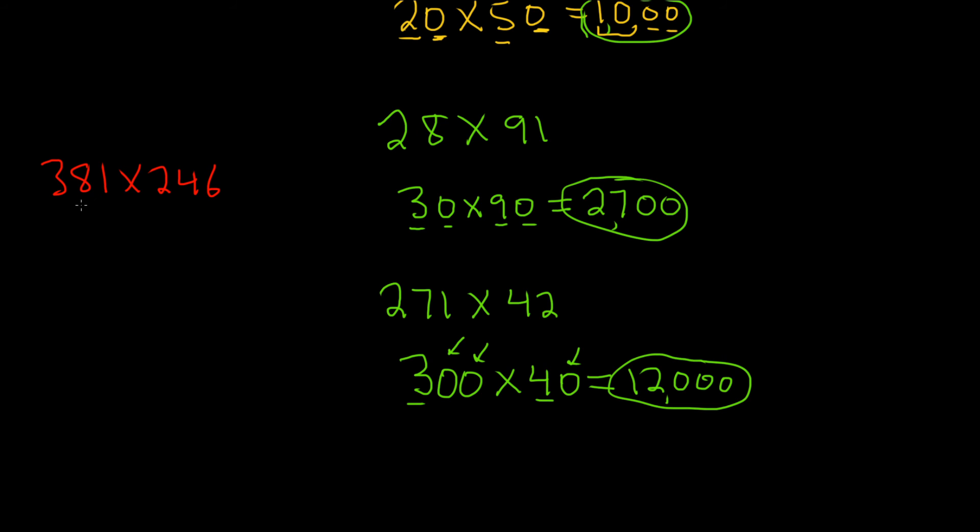So these both have a hundreds place. We have to round them both to the hundreds place. So the 381 will round up to 400 because of this 8. It's bigger than 5, so you round up. And then this one here will round down because of the 4. It's less than 5, so you round down to 200.